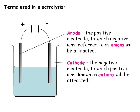The electrodes also have special names. The positive electrode is the anode. Because opposite charges attract, the negative ions in the electrolyte — which we could also call anions — will be attracted to the anode. The negative electrode is called the cathode. Positive ions, which are called cations, will be attracted to the cathode.